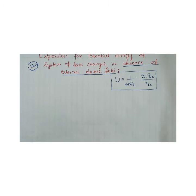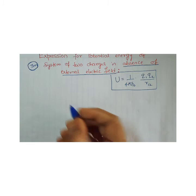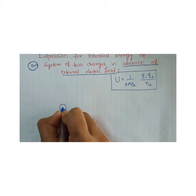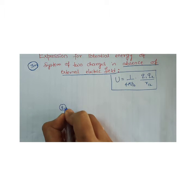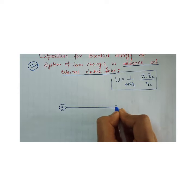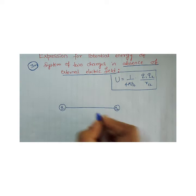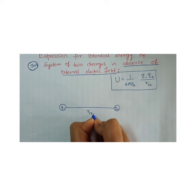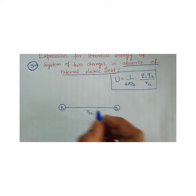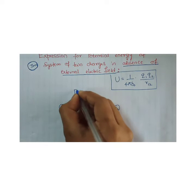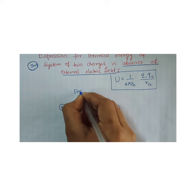Here I am drawing the final configuration: Q1 is separated by a certain distance from Q2 — that distance is R12. So this is our final configuration.